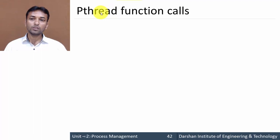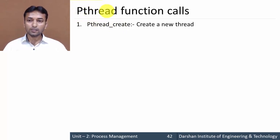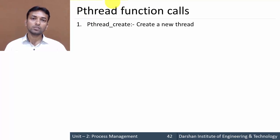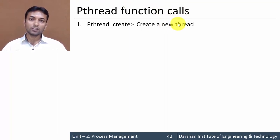The first pthread system call is pthread_create. This system call is used to create a new thread. It works the same as the fork system call in Unix — once the new thread is created, it returns its thread ID, similar to how fork returns a PID.